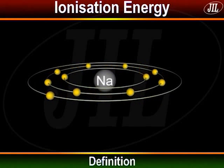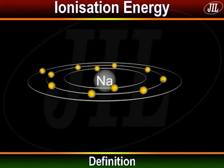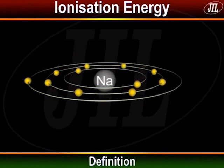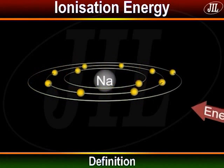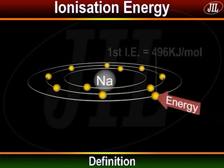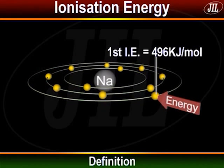The number of ionization energies an atom can have is equal to the number of electrons in that atom. The energy required to remove the first electron is called the first ionization energy. In the case of sodium, it is 496 kilojoules per mole.